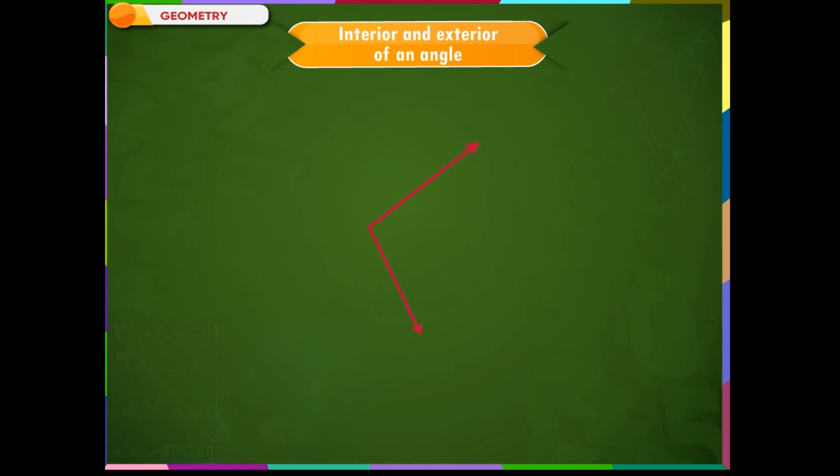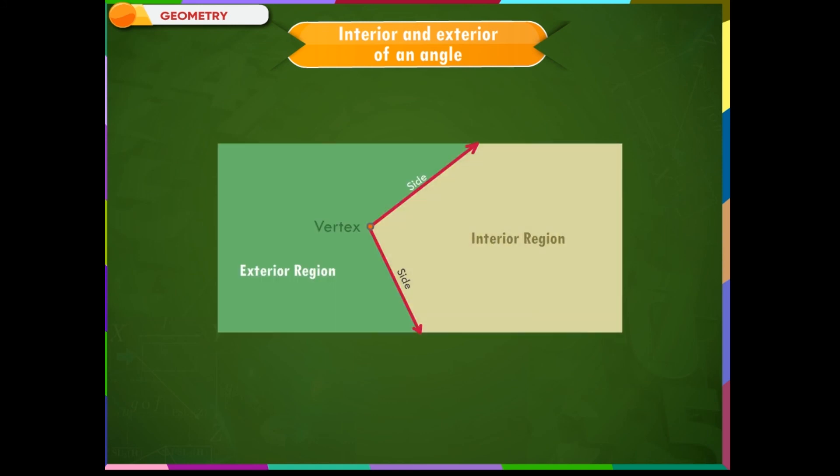The portion between the arms of an angle is called interior of an angle. The portion outside the arms of the angle is called exterior of an angle.